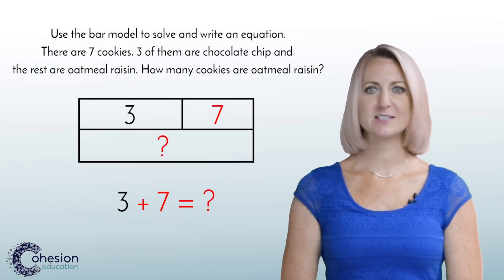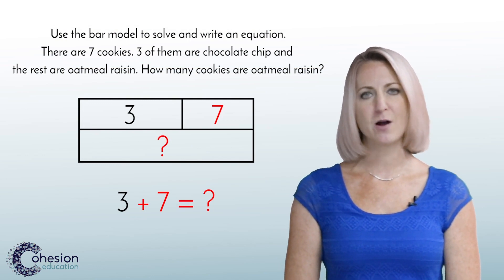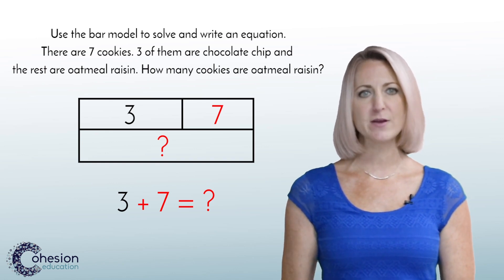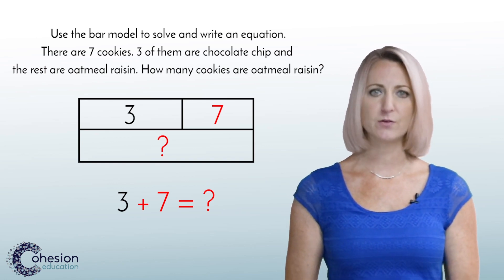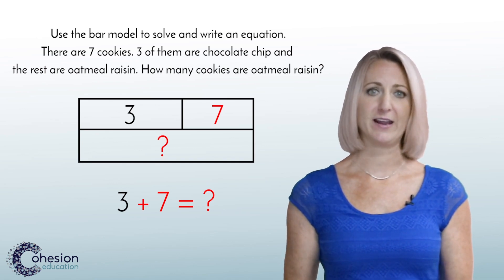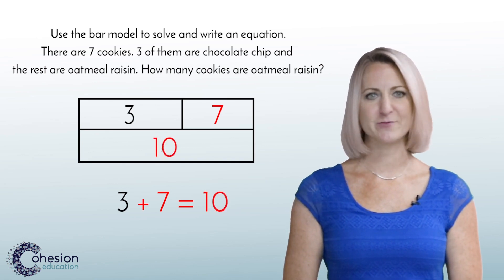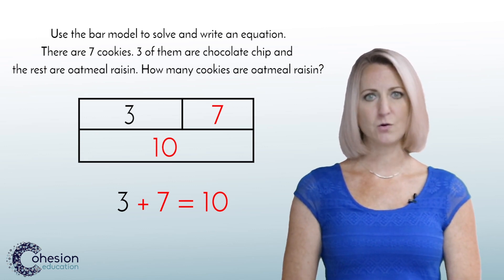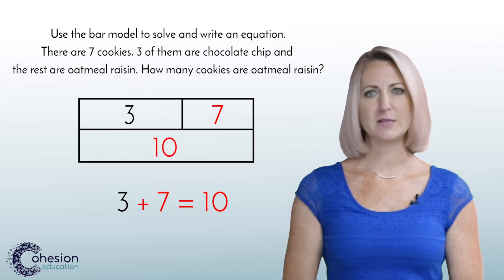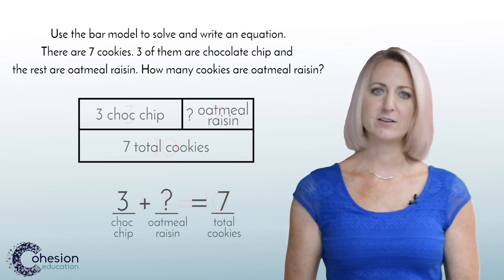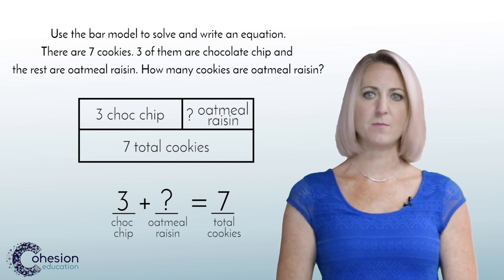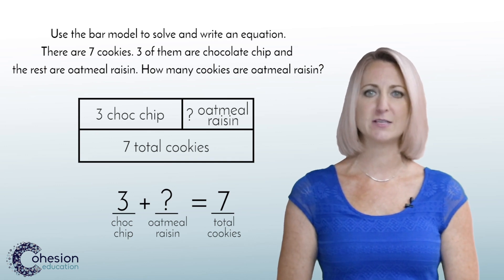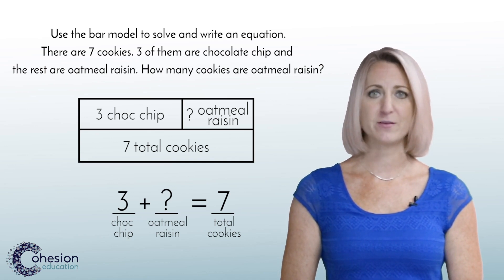A common error is that students might put the numbers in the wrong place on the bar model. For instance, in the last example, students may record the three and the seven as both of the parts in the model. This would result in an answer of 10, which is unreasonable. Ask students if their answer makes sense — since there are seven cookies total, could there possibly be 10 oatmeal raisin cookies? Having students label the numbers in the bar model and the equation could also be helpful. Students would see that the total number of cookies was given rather than both of the parts.